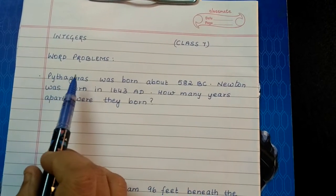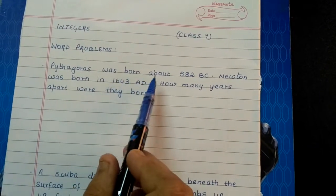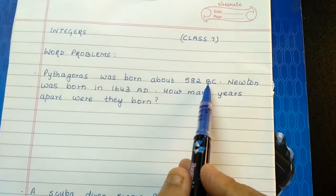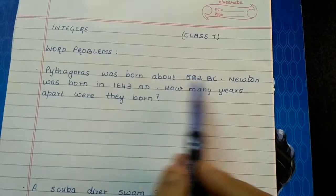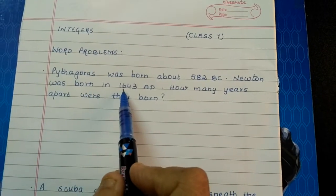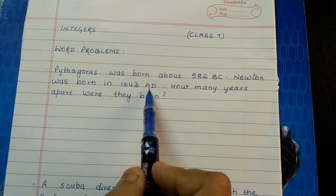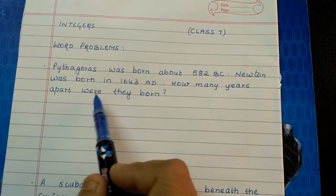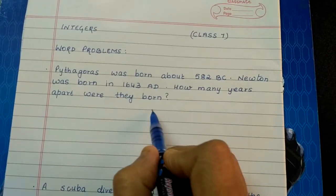Next word problem on integers. Pythagoras was born about 582 BC. BC means before Christ, that means backward. Newton was born in 1643 AD, Anno Domini, that means we will go forward. How many years apart were they born?